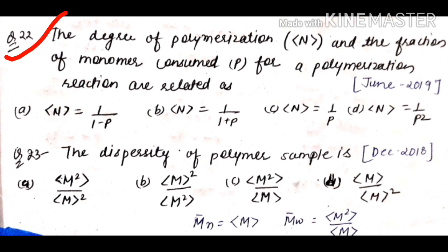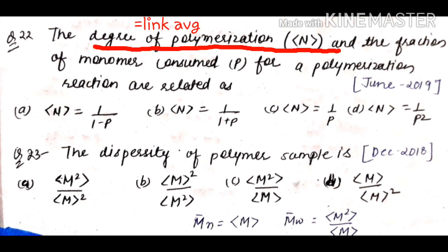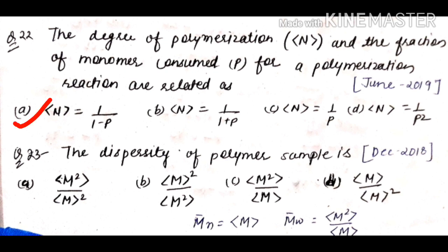From June 2019: the degree of polymerization N and the fraction of monomer consumed P are related by what expression? Degree of polymerization is the same as link average for a polymer. The link average formula is 1/(1-P), where P is the probability (fraction of monomer consumed). So the answer is A: N = 1/(1-P).